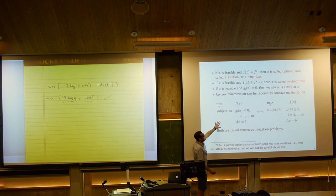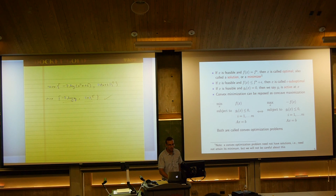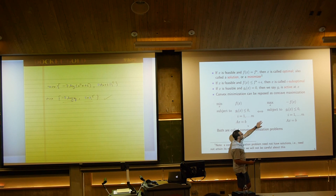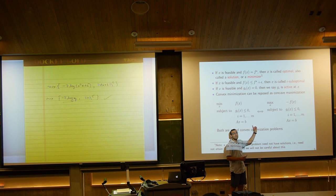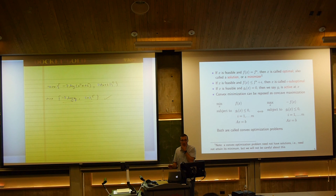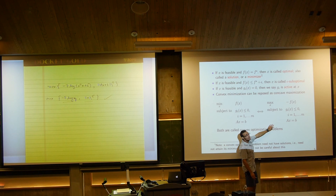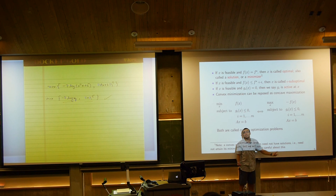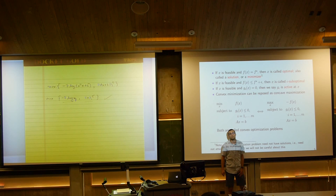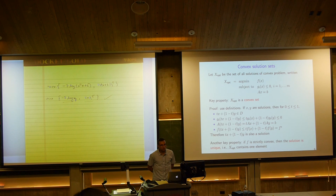We can always take a convex minimization problem and recast it as a concave maximization problem. Minimizing f(x) subject to constraints is equivalent to maximizing -f(x) subject to the same constraints — the solutions are the same, though the optimal values differ by a sign. So I'll sometimes call a concave maximization problem a convex optimization problem, meaning it can be reposed as convex minimization.